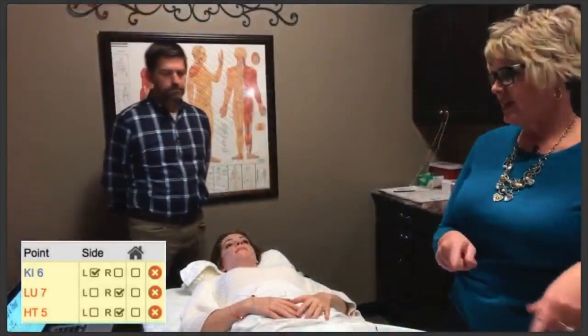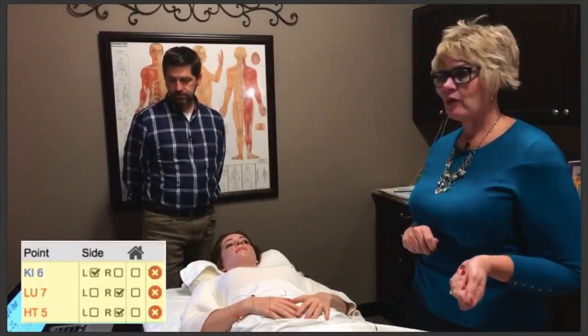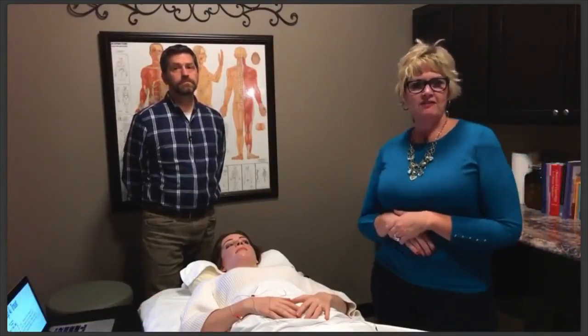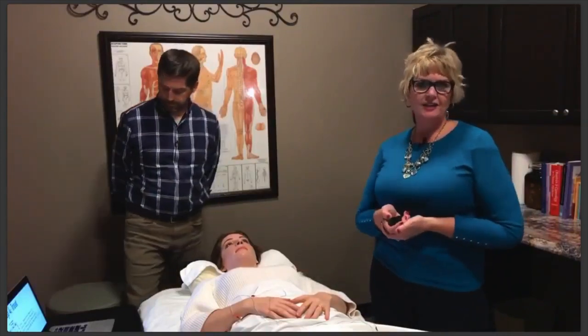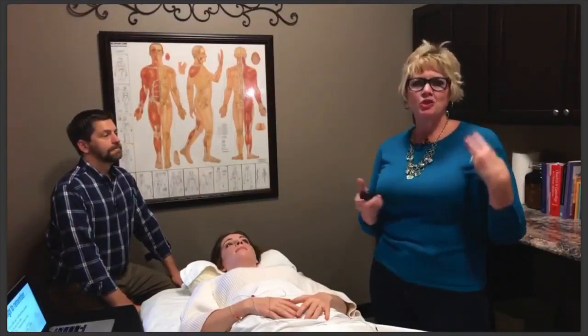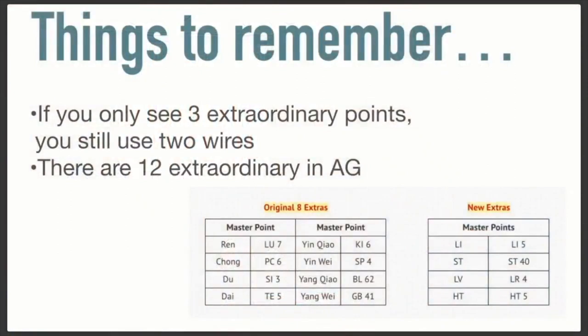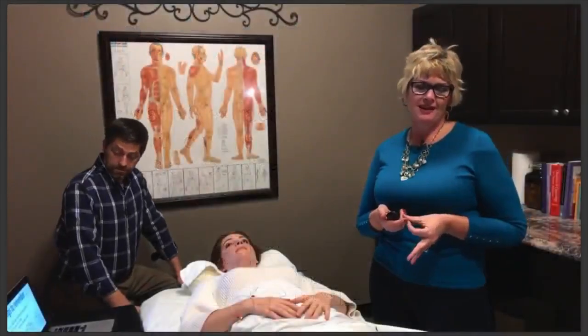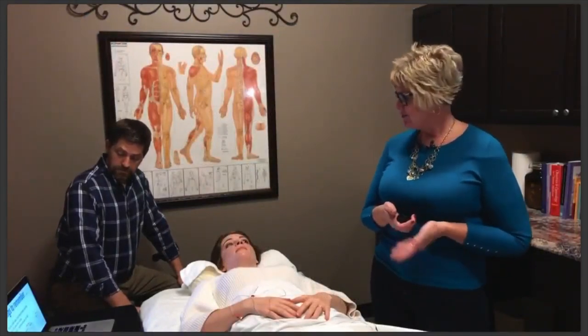And then of course I would do Sanjiao 10 and Gallbladder 12 connected, and Bladder 40 and Bladder 1 connected, and then leave the patient for 10 minutes. So the take-home message for our second treatment: if you only see three extraordinary points, you'll still use two wires and you will hook two leads up to the same needle. Also recognize that in AcuGraph there are more than the eight extraordinary vessel points — there are 12 of them. The new master points are Large Intestine 5, Stomach 40, Liver 4, and Heart 5. That is the basics on ion pumping cords, and I think you're going to feel confident to move forward and begin treating with them.